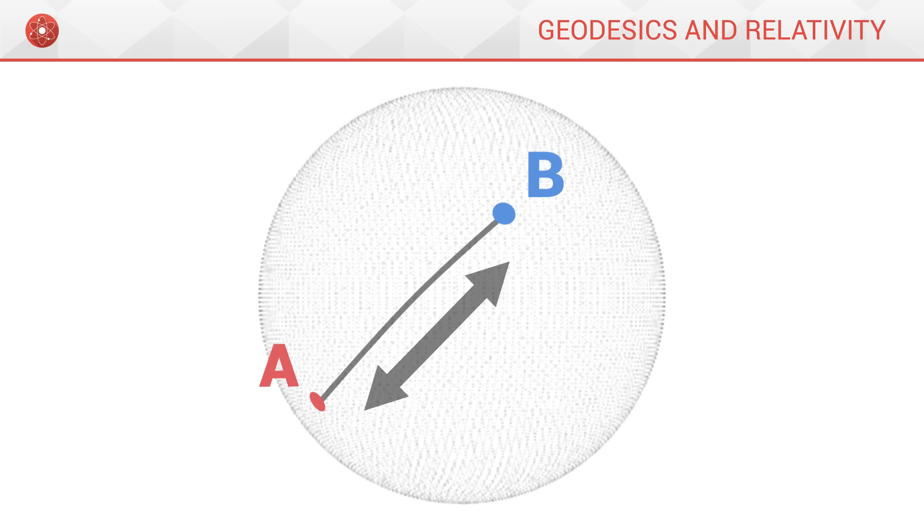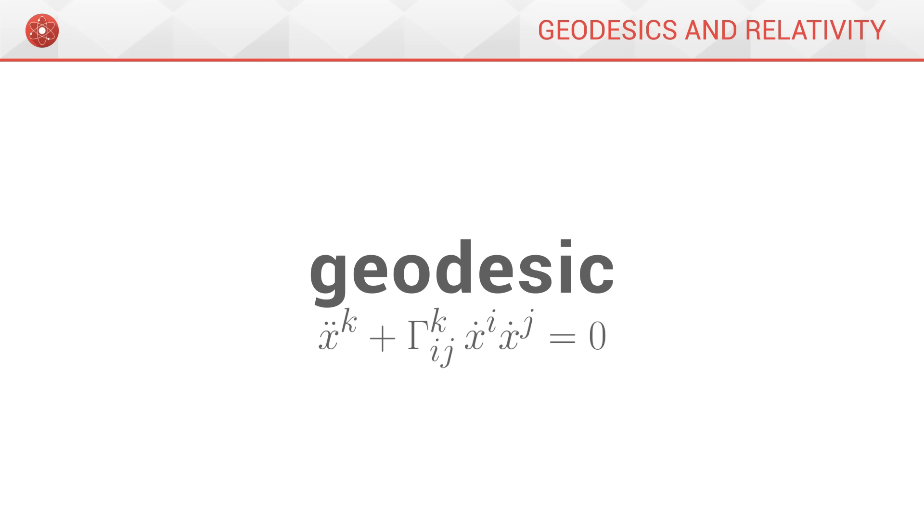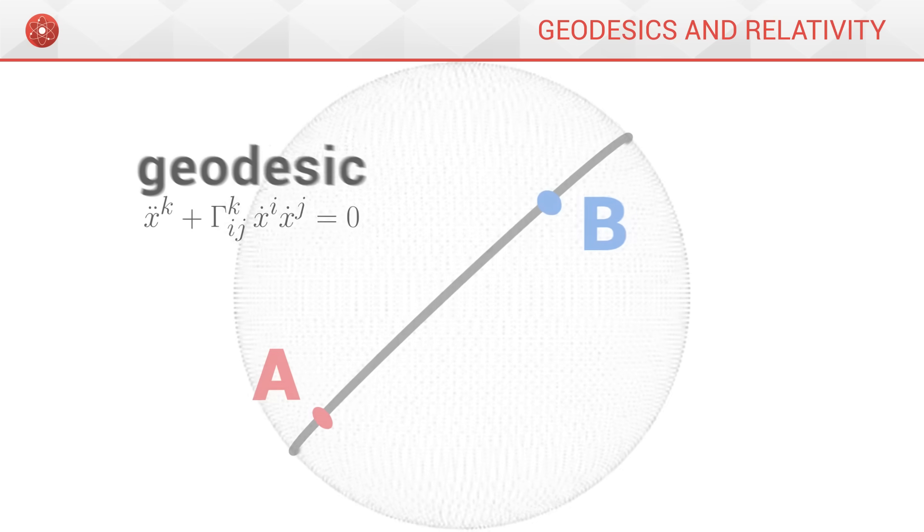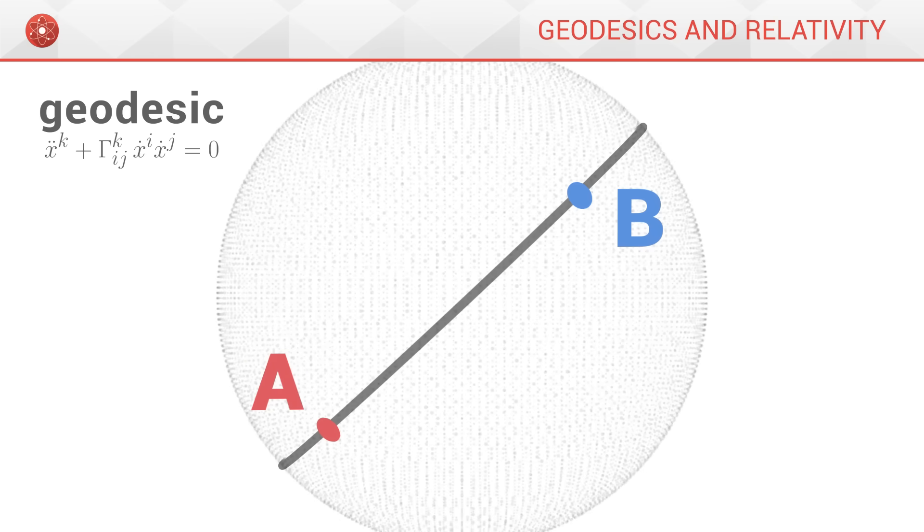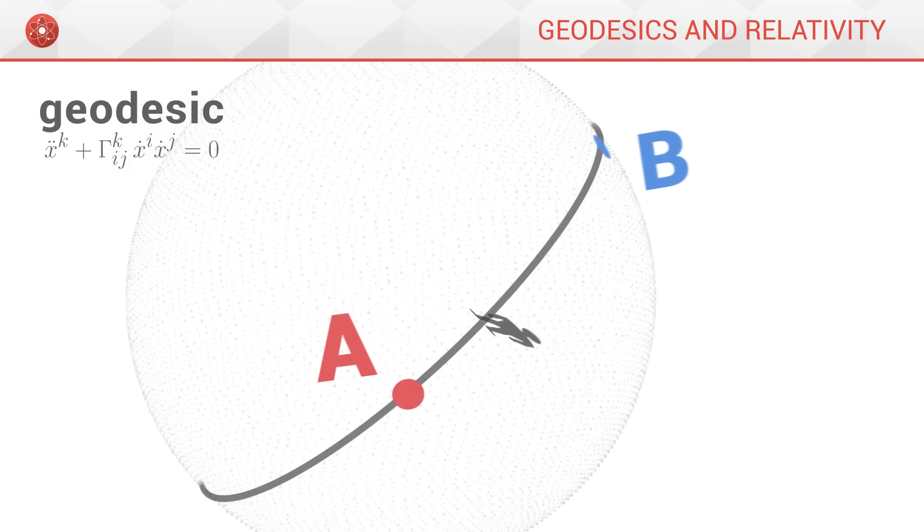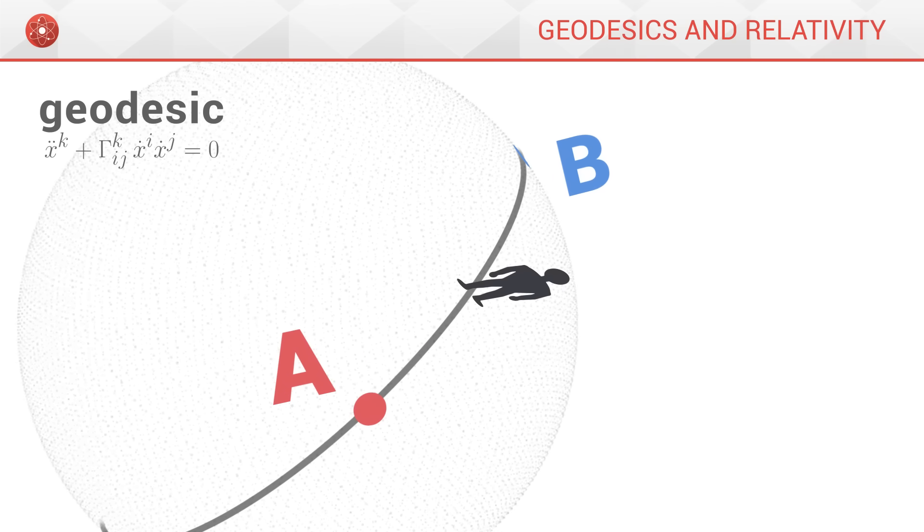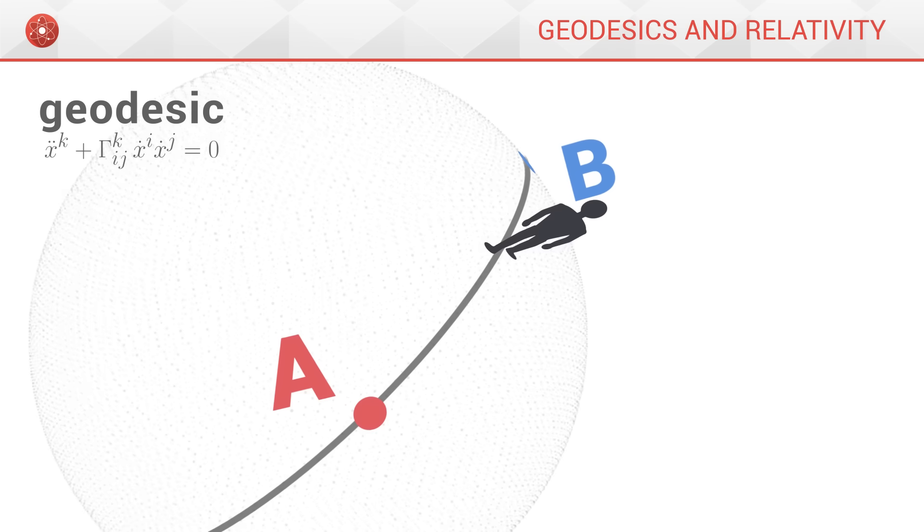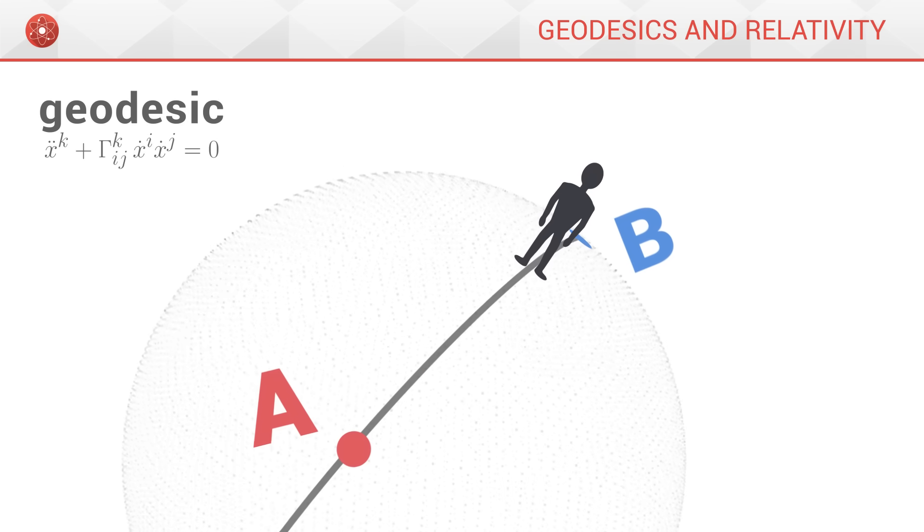This type of trajectory is called a geodesic. It is the generalization of a straight line, a trajectory along which one walks one foot in front of the other. Each step takes us forward along the same direction as the previous step. We never stray off course.